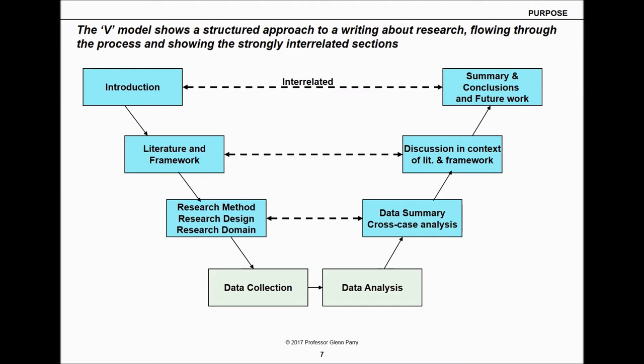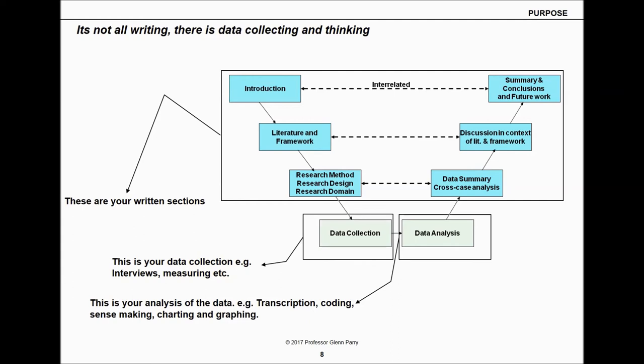You then move to your summary, conclusions — what you found, why, and future work. You'll see these sections are interrelated: your introduction should tie back to your summary and conclusions, the literature and framework must link into your discussion, and your research method must be reflected in what you show you've done. In this model, the blue boxes are your written sections and the gray boxes are your data collection — the transcriptions, codings, and sense-making you need to do.